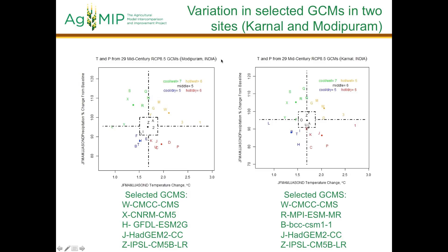Just to go to the next slide. This is Karnal. Next slide. Here I'm just showing the comparison between two sites, that is Karnal and Modipuram. This site is around 100 kilometers away - the distance is only 100 kilometers and the climate is almost the same. One goes from hot and wet to hot and dry.